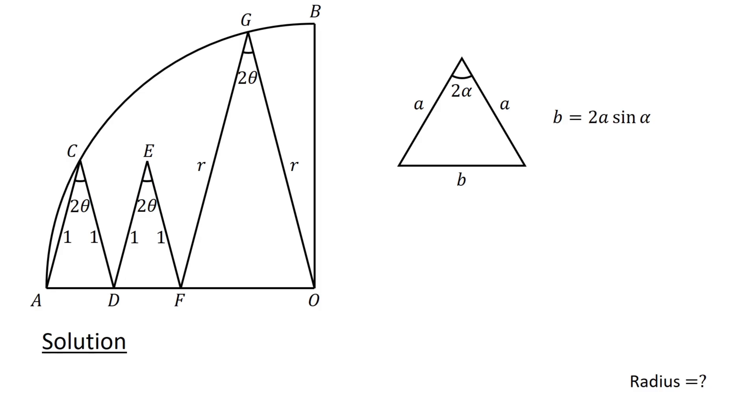Let's prove this formula using the law of sines. The base angle of the triangle is 180 degrees minus 2 alpha divided by 2, or 90 degrees minus alpha. Applying the law of sines gives us B over sin 2 alpha equals A over sin of 90 degrees minus alpha.